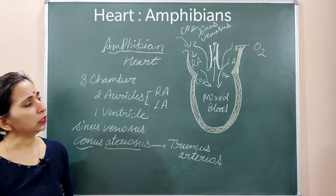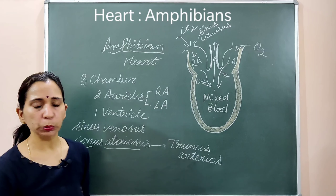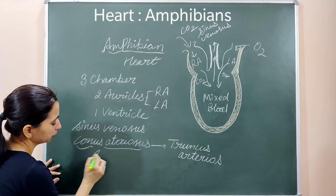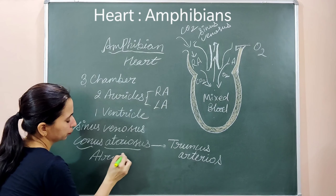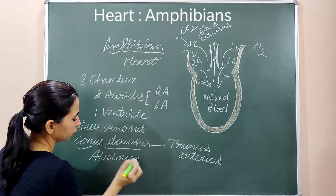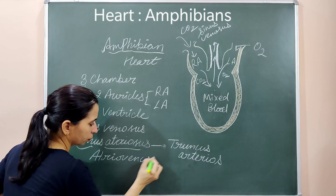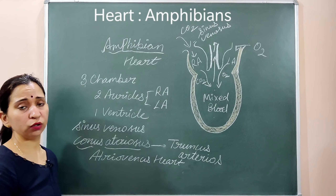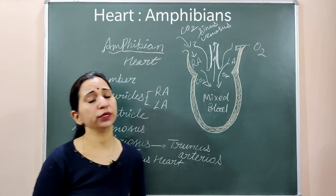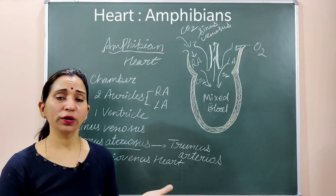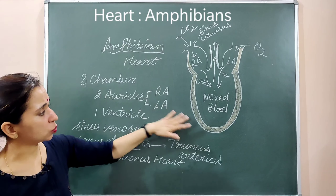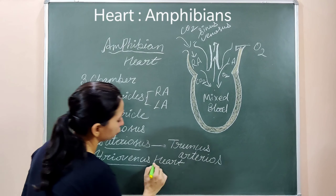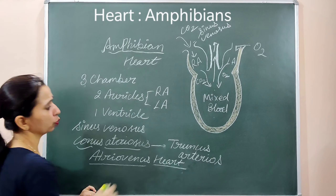Since the amphibian heart transports mixed blood — containing both oxygenated and deoxygenated components — this kind of heart is known as an atrio-venous heart. It is called venous because it was transporting deoxygenated blood, and atrio-venous because it now transports mixed blood.